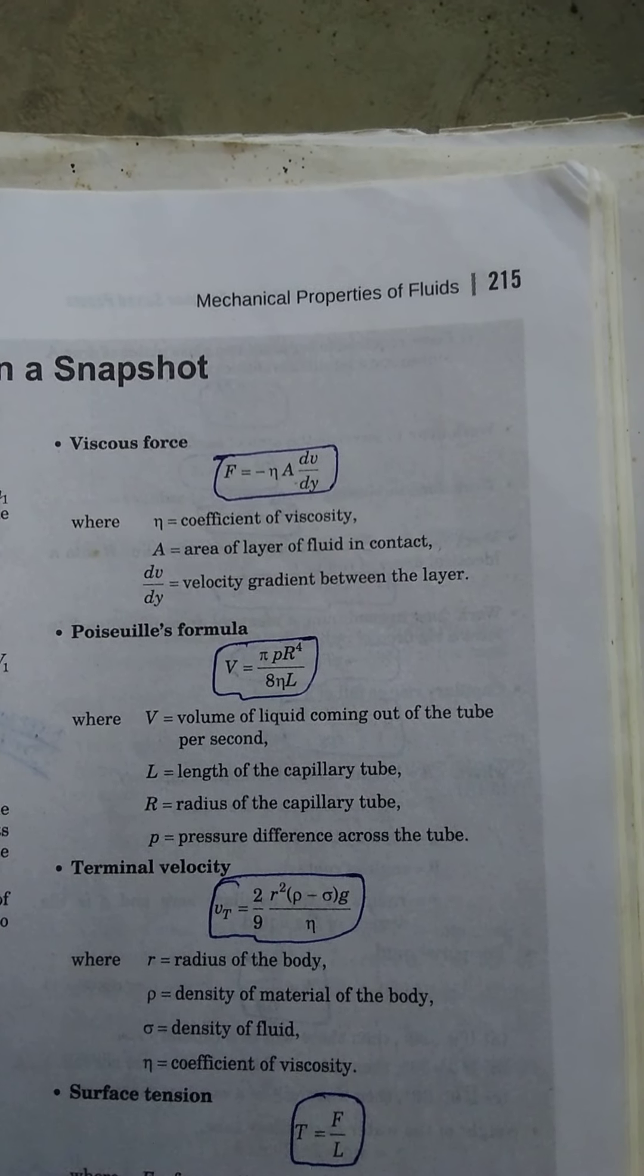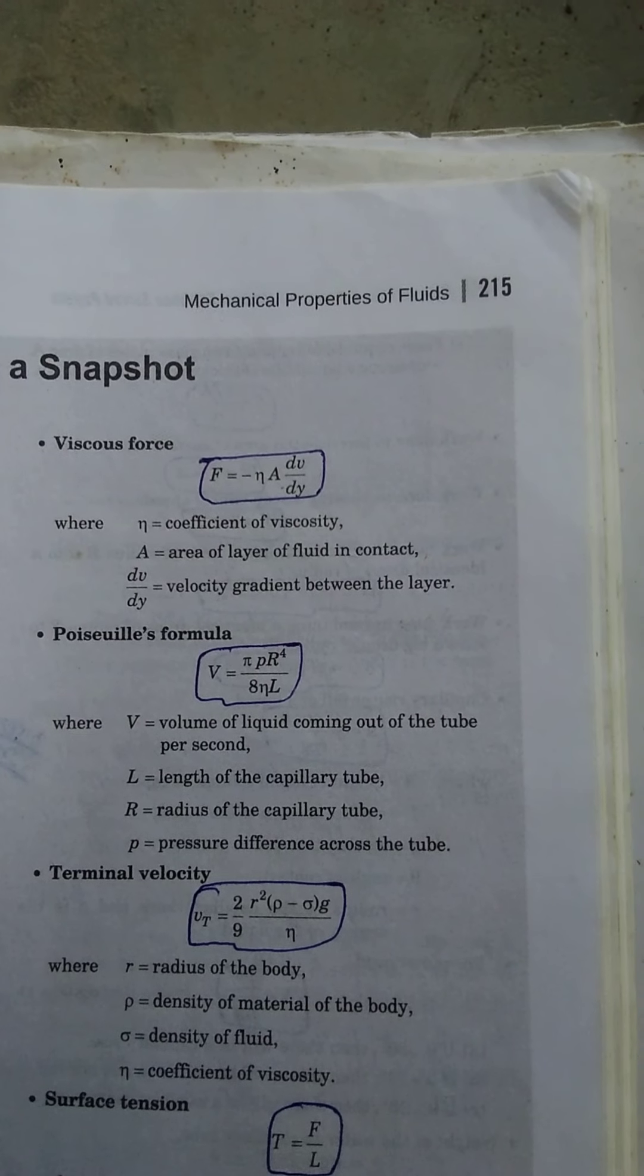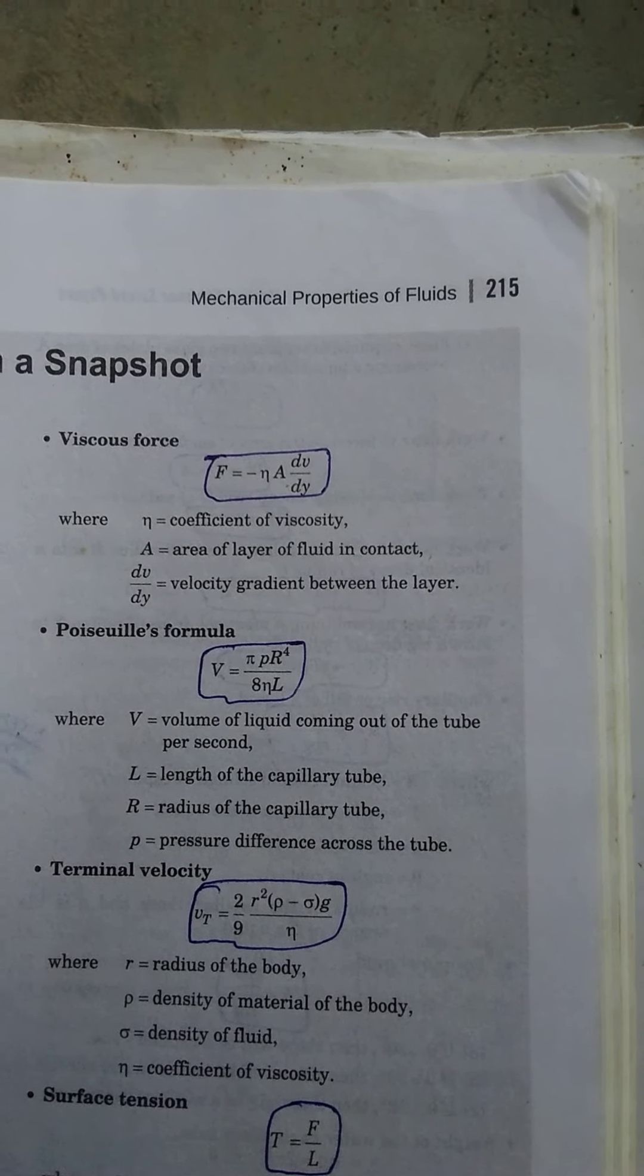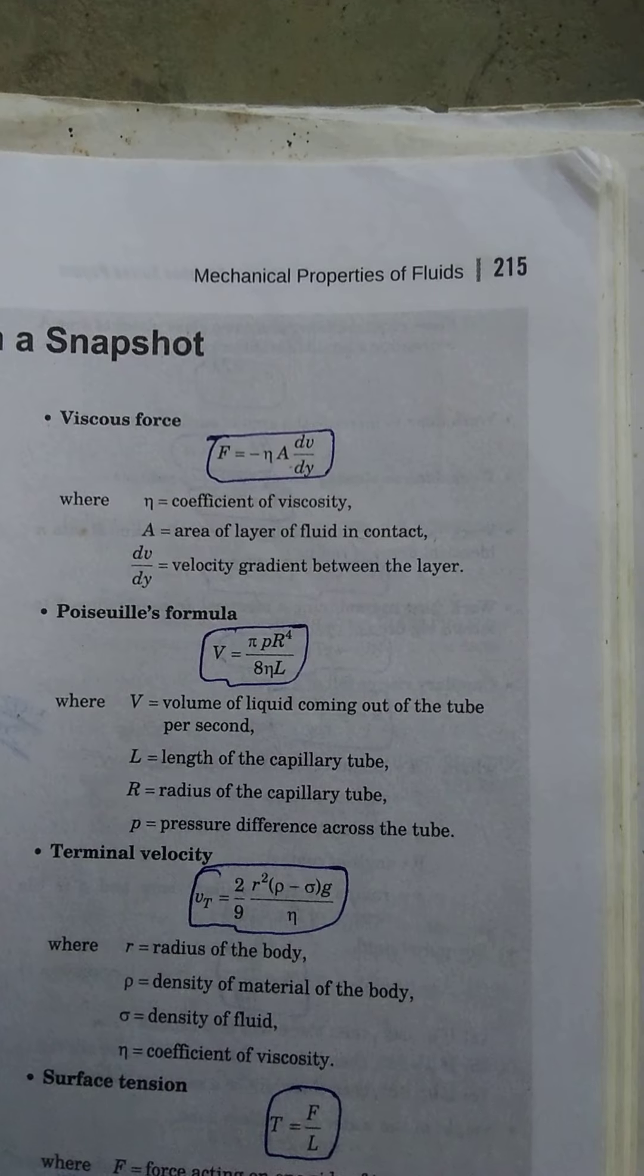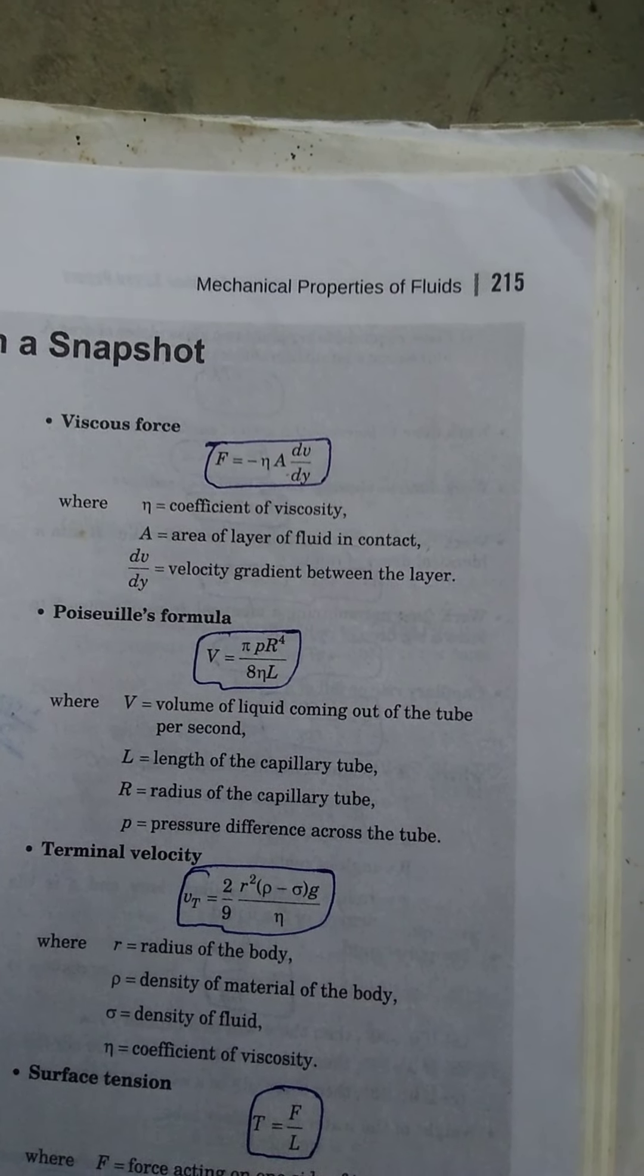Viscous force: F equals -ηA(dv/dy), where η is the coefficient of viscosity, A is the area of the layer of fluid in contact, and dv/dy is the velocity gradient between the layers.